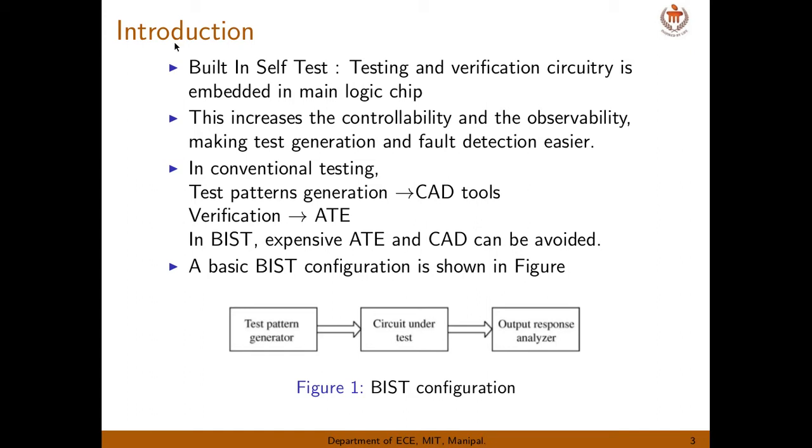A typical BIST configuration is shown below. We can see here it has typically three functional blocks. First one is test pattern generator. It will generate the test vectors required for testing the circuit. This is circuit under test, DUT, device under test. Then what output you get, we need one more circuitry for analyzing. We have to compare with the expected and decide whether output is correct or not, or circuit is faulty or not.